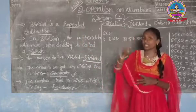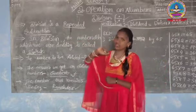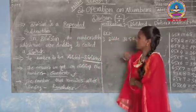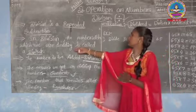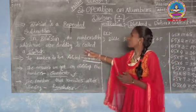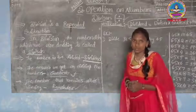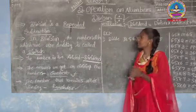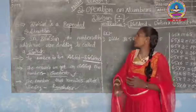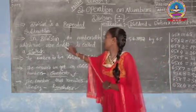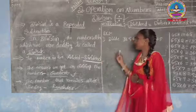Repeated addition is multiplication. Repeated subtraction is division. In this division, the number with which we are dividing is called the divisor. A number with which we are dividing is called divisor. And what is dividend?